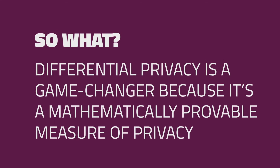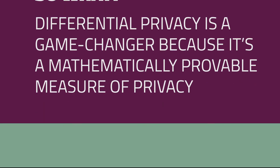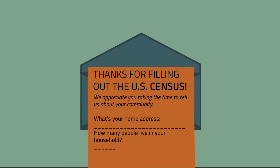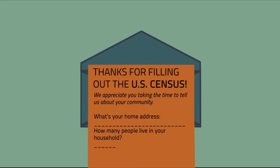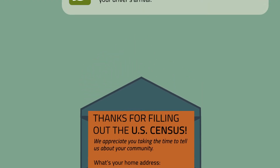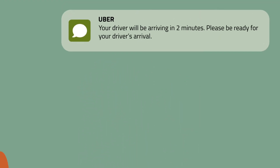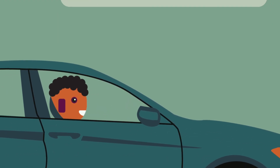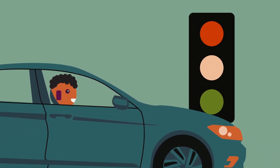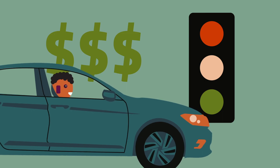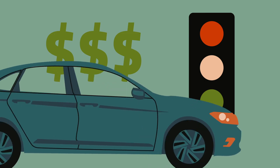Differential privacy is a game-changer because it is a mathematically provable measure of privacy, so you can tell how well your personal information is protected. It's already being used for data analysis by the U.S. Census, as well as major companies like Apple and Google. And researchers from UC Berkeley have helped Uber, the ride-sharing service, use differential privacy to study everything from traffic patterns to driver's earnings, all while protecting users' privacy.